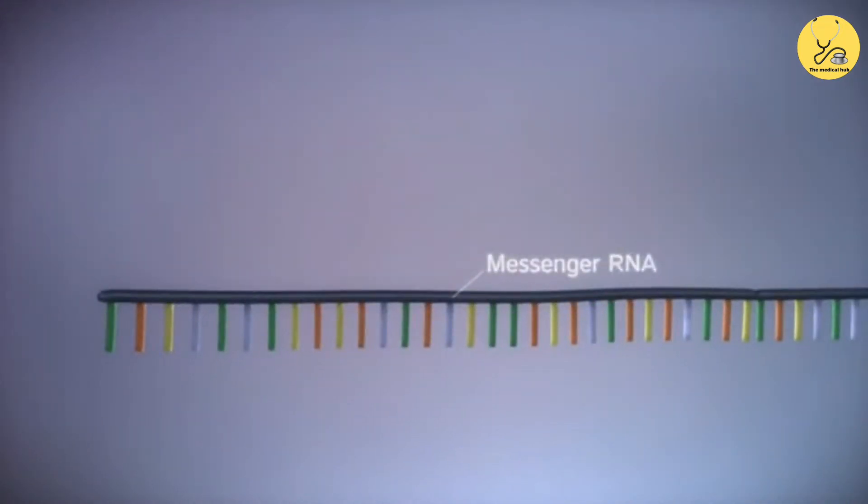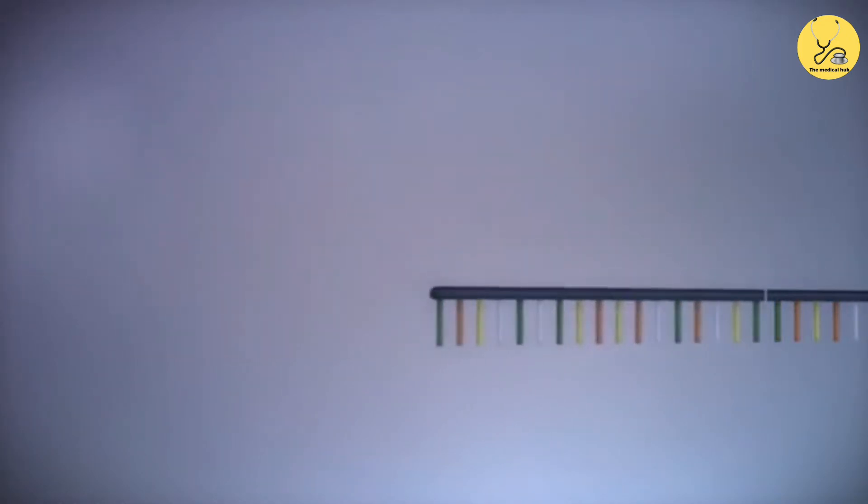Before the messenger RNA can be used as a template for the production of proteins, it needs to be processed. This involves removing and adding sections of RNA.